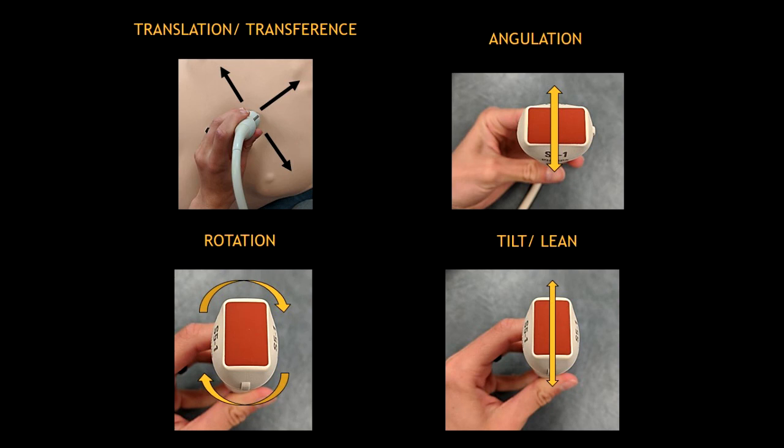And that's it, those are the four different movements of the probe. This will help you to understand better how to get the different echo windows. Don't forget to subscribe to my channel and see you on another video. Bye!